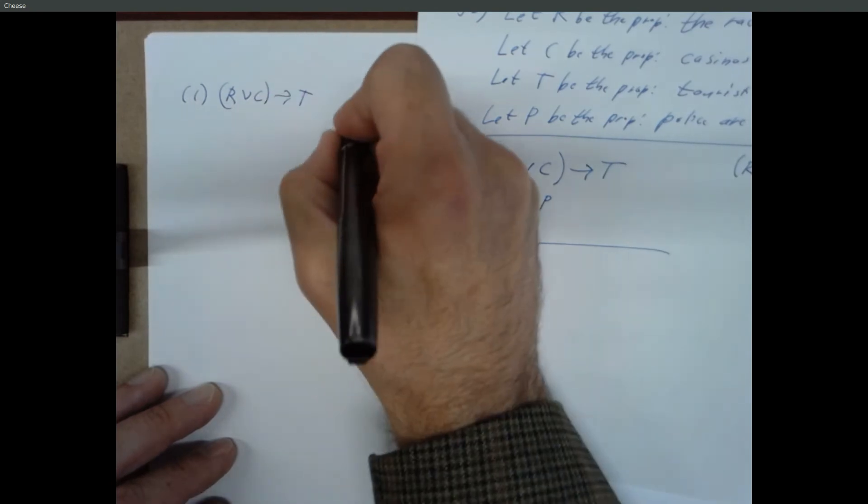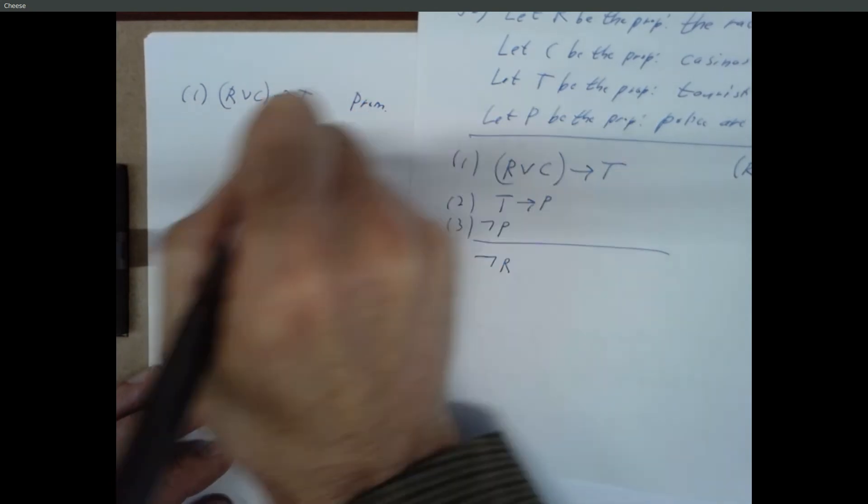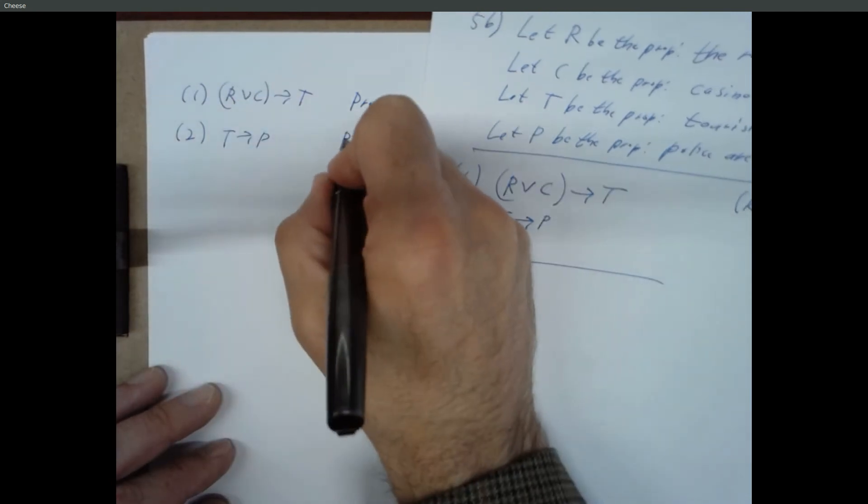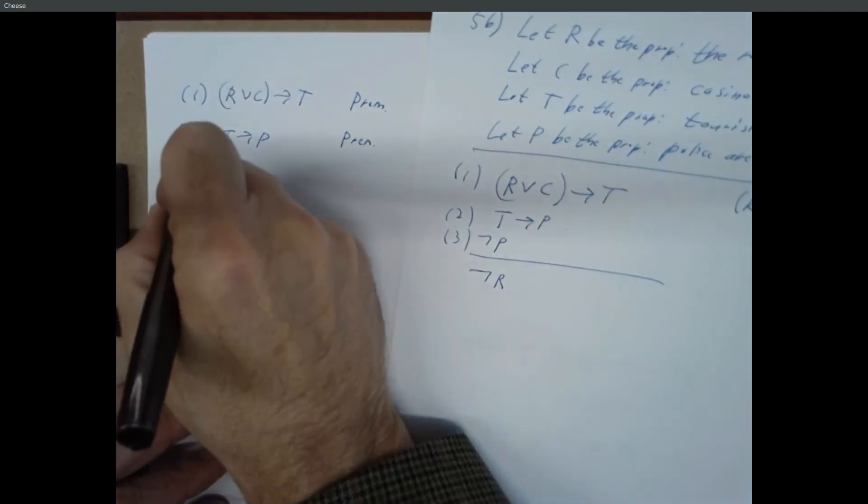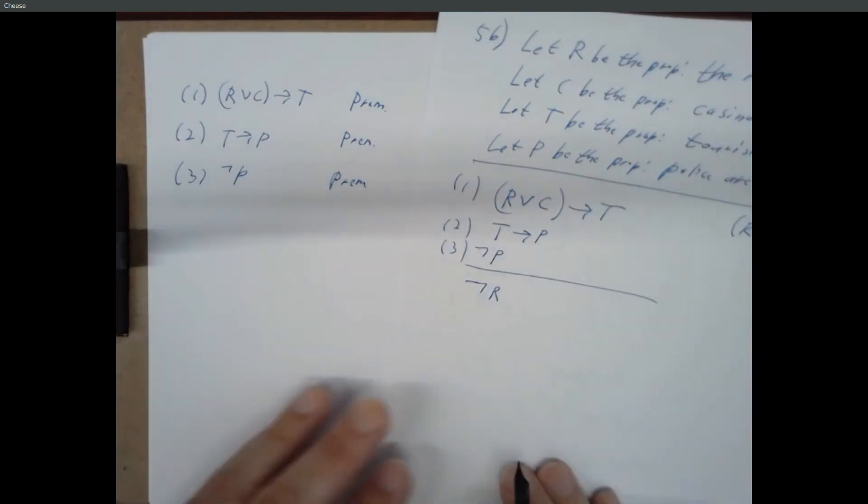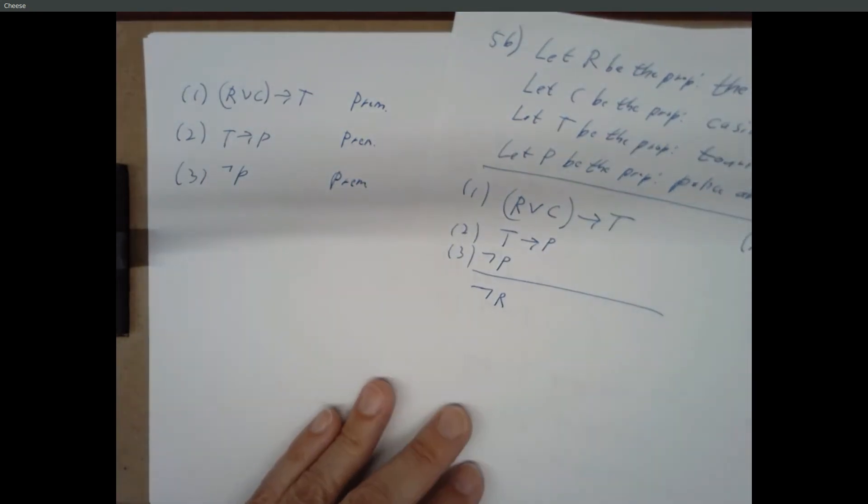So here's the theorem we're trying to prove. And we could also write it like this. So we could say, prove that this is true or not true. So if we want to do this officially, this is what we're trying to show. We don't want to accidentally have not R as part of our proof, because we don't know not R is true. So let me do this like the full way. R or C implies T, that's a premise. Step two, T implies P, that's a premise. Step three, not P, that's a premise. And we're trying to get to not R.